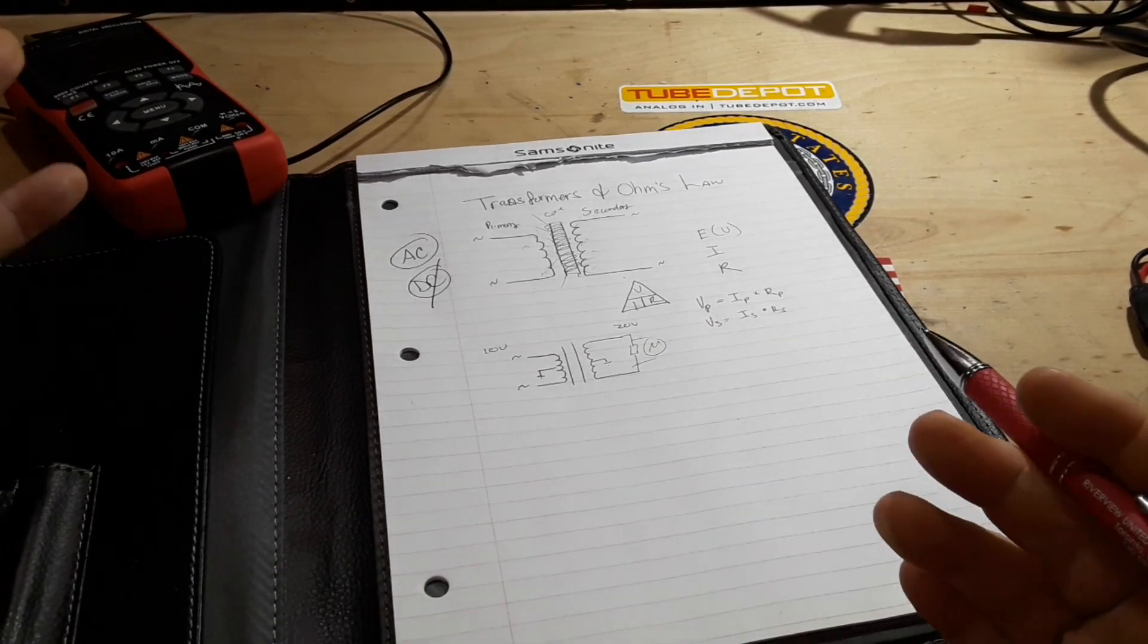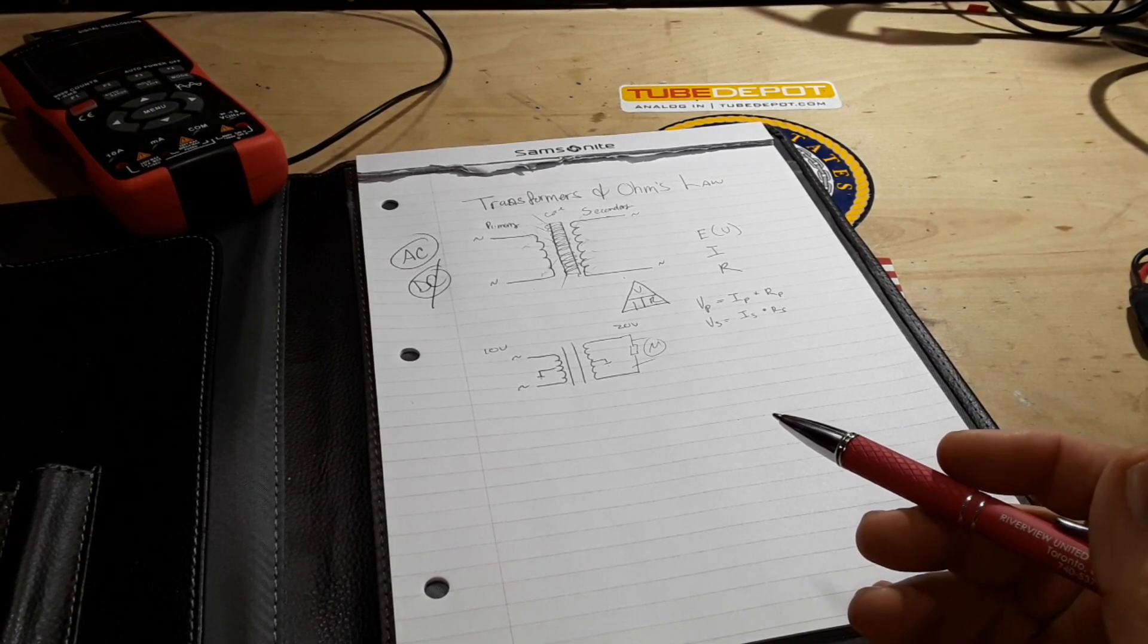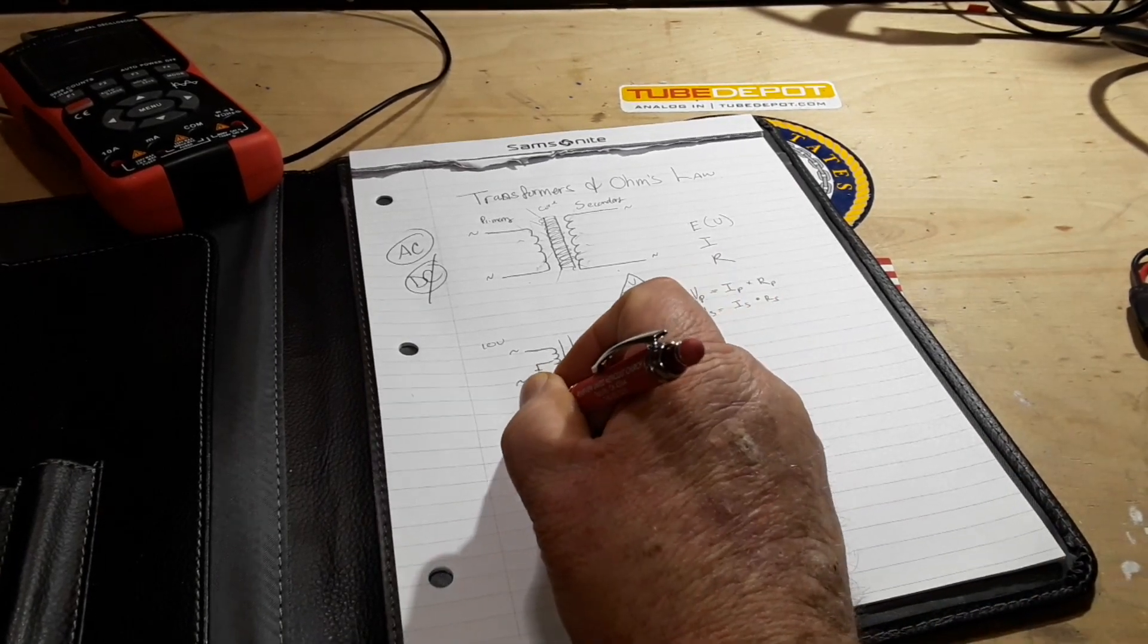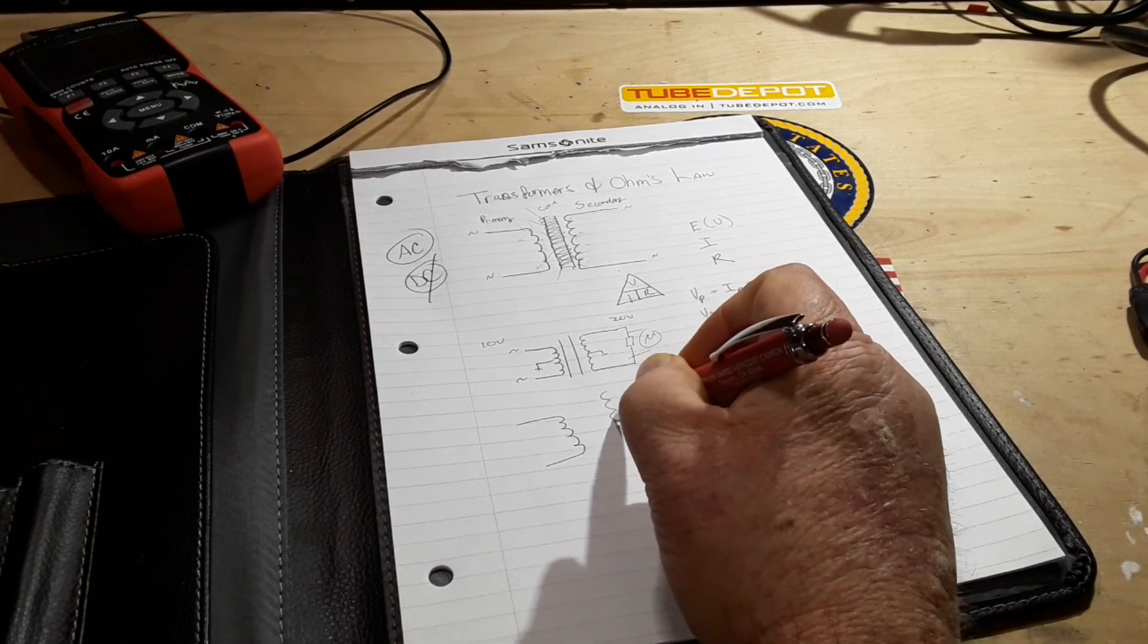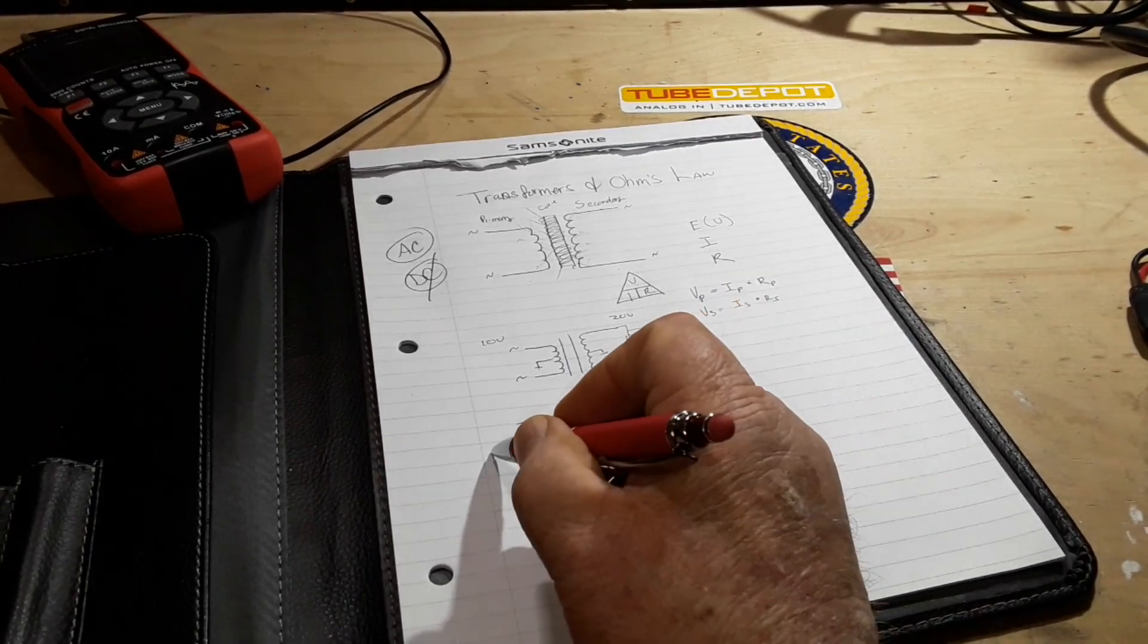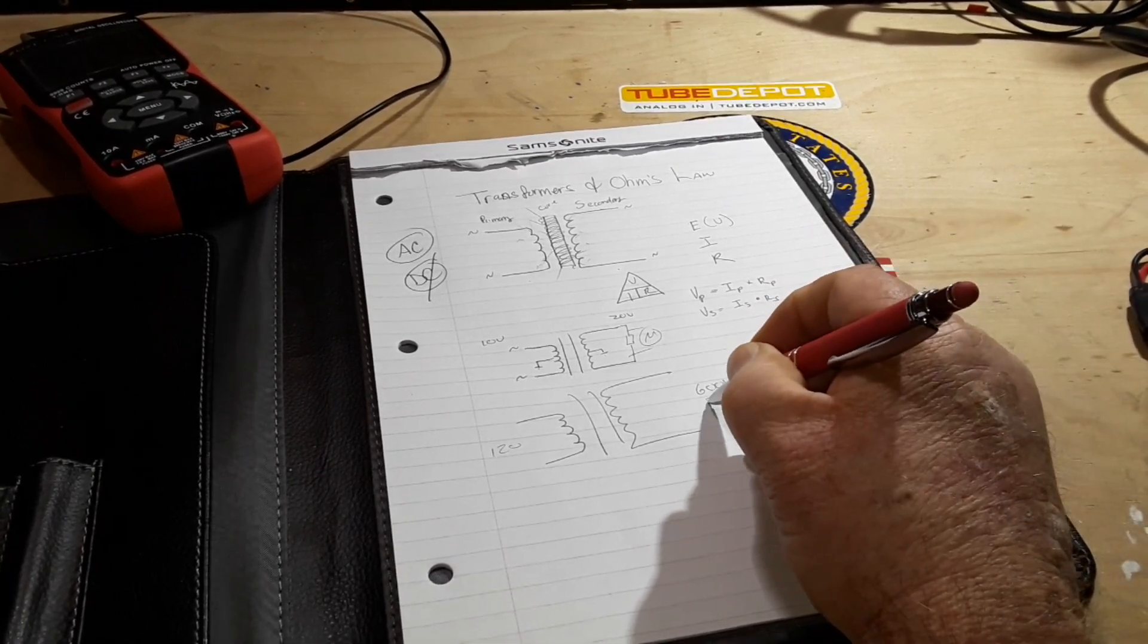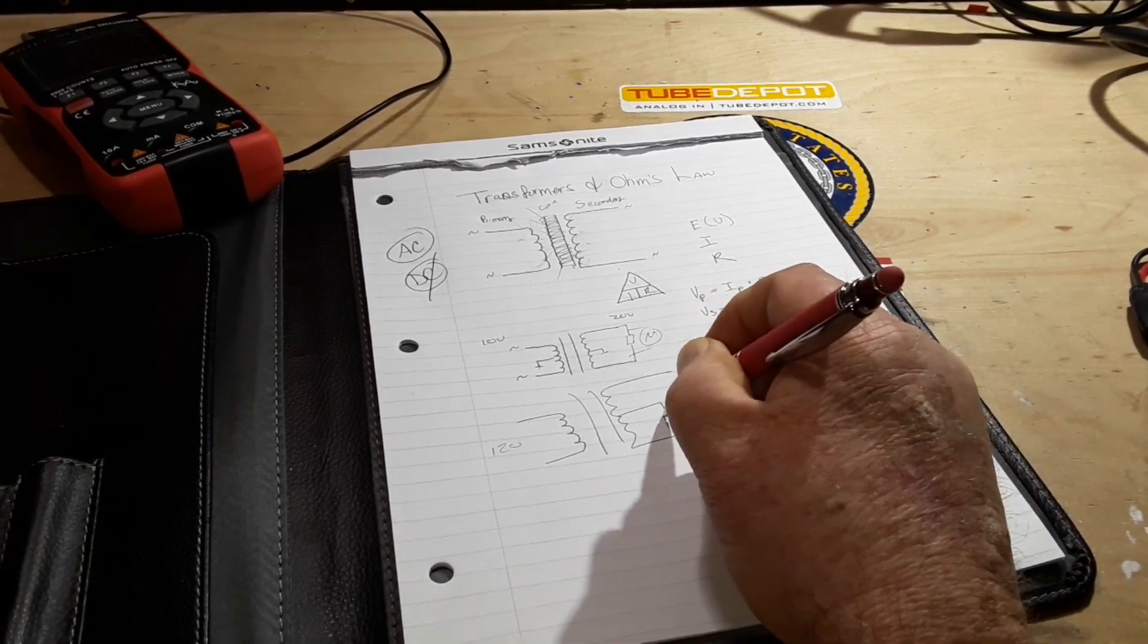So for instance if you paid attention to the series videos I'm doing on restoring that old Gibson amplifier, there are three transformers in it but we'll talk about two of them. So in that thing we have the primary and the secondary with a big iron core and we're feeding in 120 volts and we're getting out 600 volts. It's actually 300-0-300 because it is also center tapped.